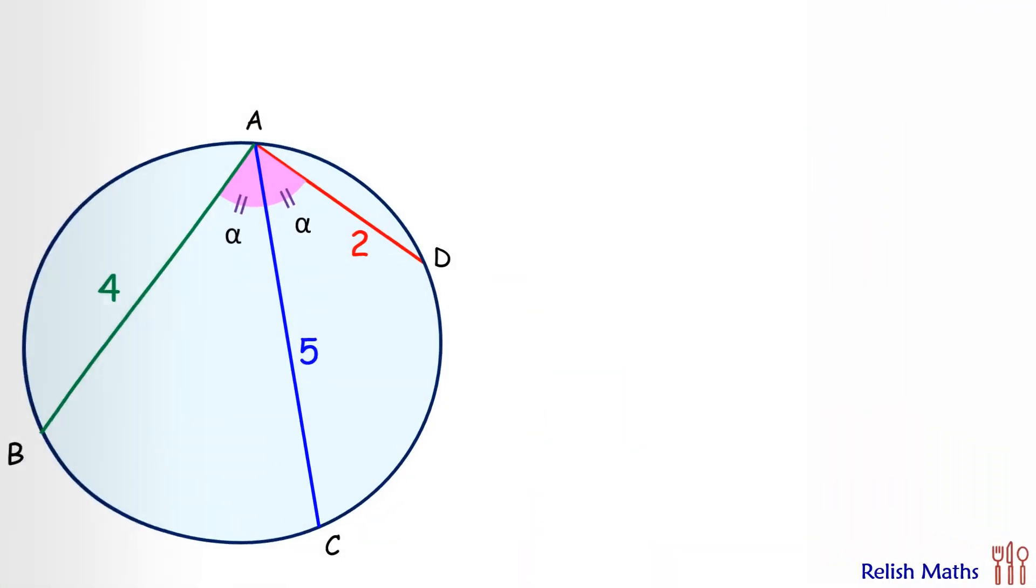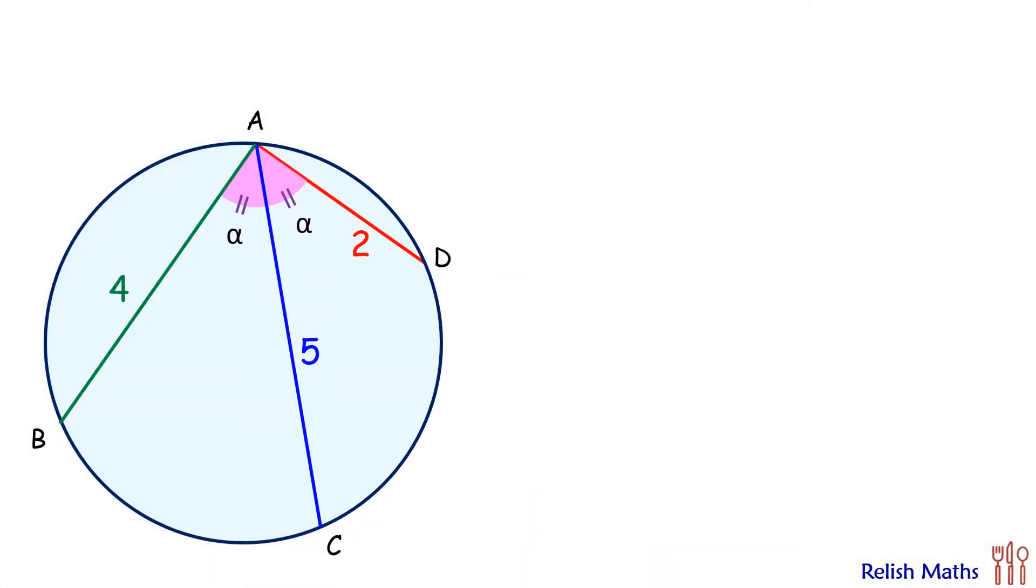Let's check the solution. We'll start by joining BC and CD. We know that in a circle, if two chords are sustaining equal angle at the circumference, then they are equal in length. Here the chord BC and CD both are sustaining angle alpha at point A, and thus if BC is of length x, then CD will be of length x.